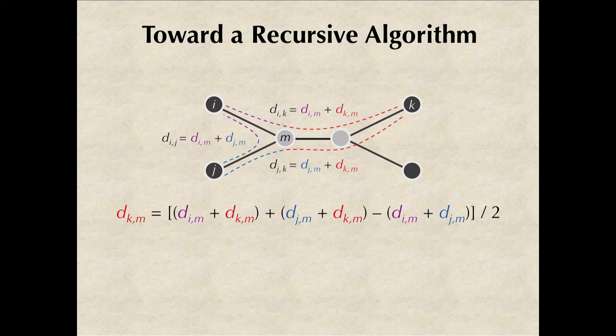So I hope you're wondering, why would I write d_km in this weird way? Well, remember that red plus purple was the distance from i to k, red plus blue was the distance from j to k, and blue plus purple was the distance from i to j.